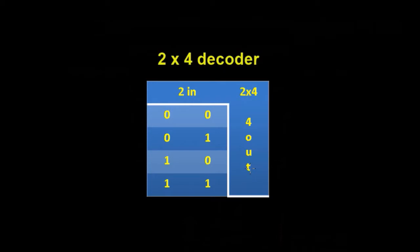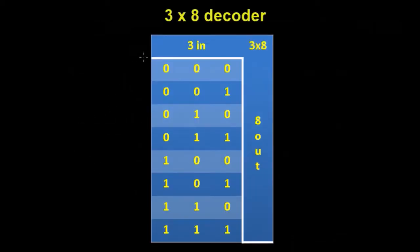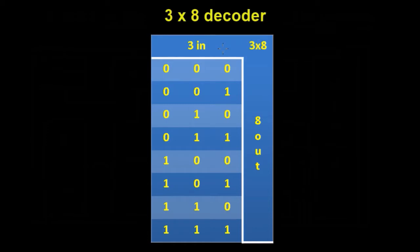Let's go ahead and look at the 3x8. This is a 3x8 decoder. We've got three inputs — three bits in — and we've got eight possible combinations of those three bits as an output. So that means we've got three in and eight out. We need to build a circuit that will allow us to get access to all of the combinations of the individual bits that we put in.